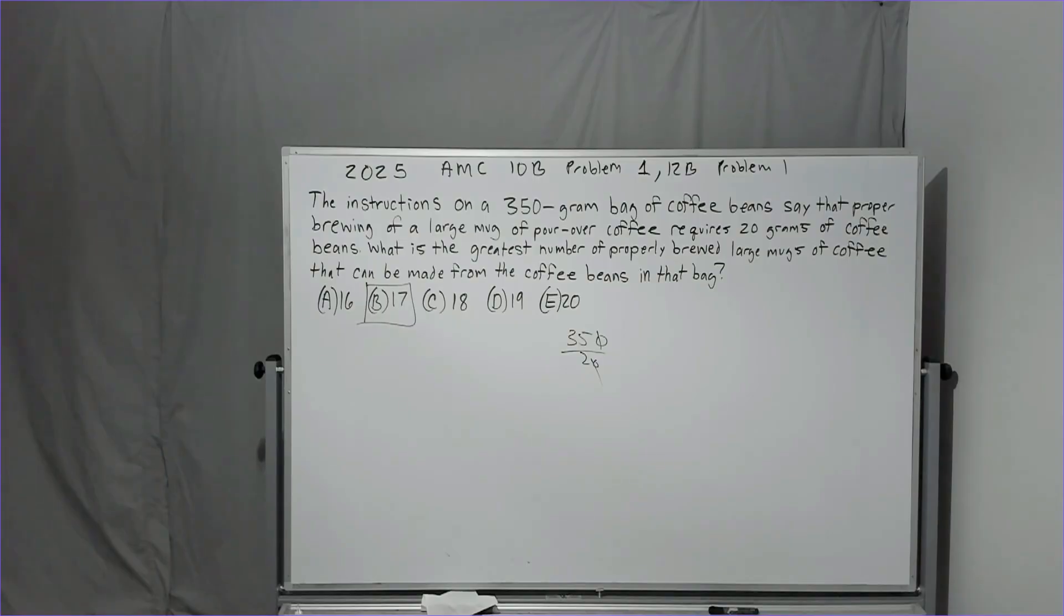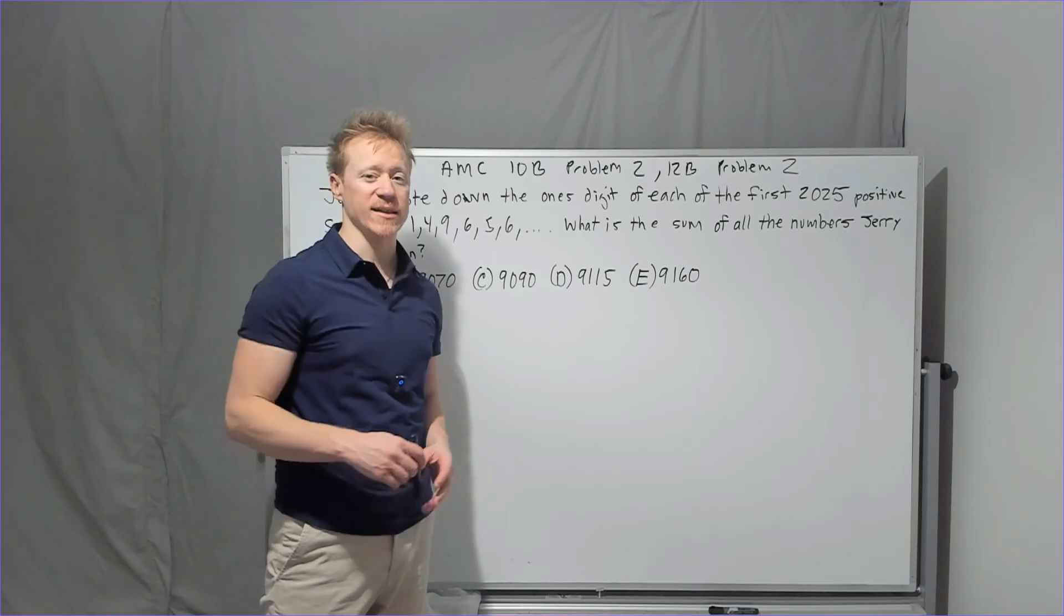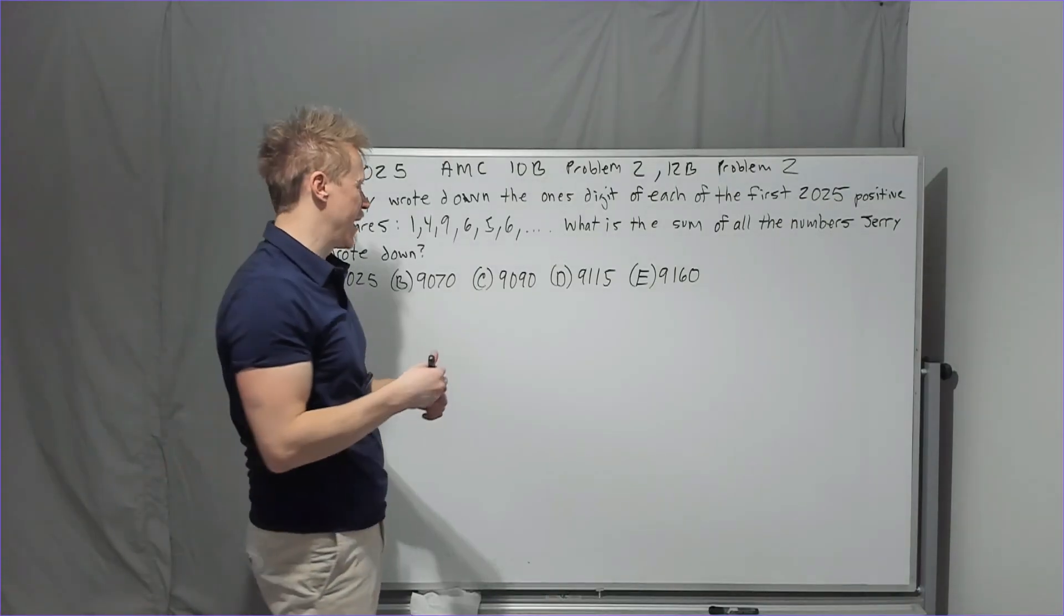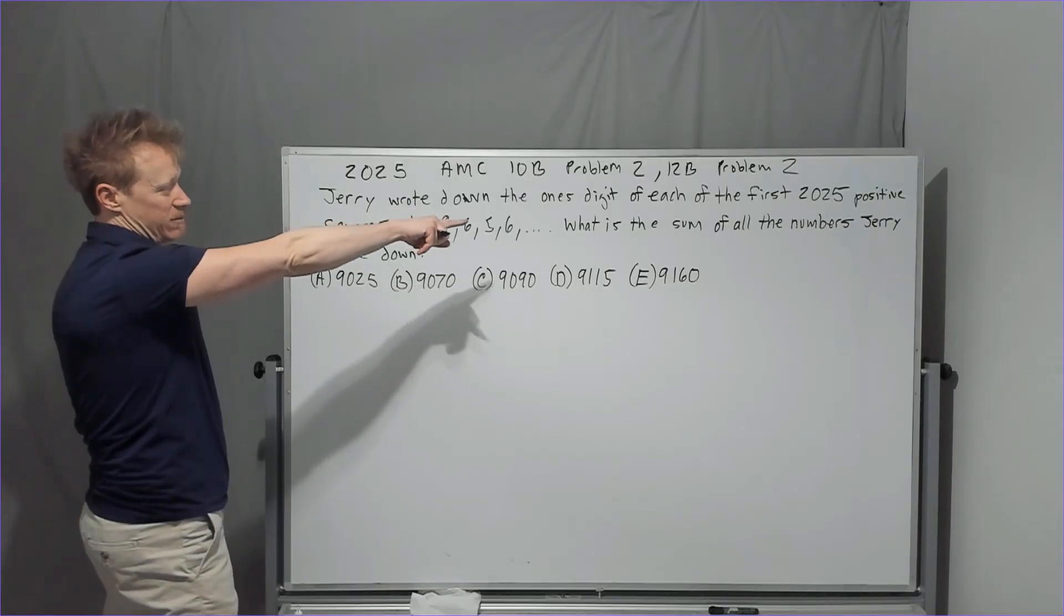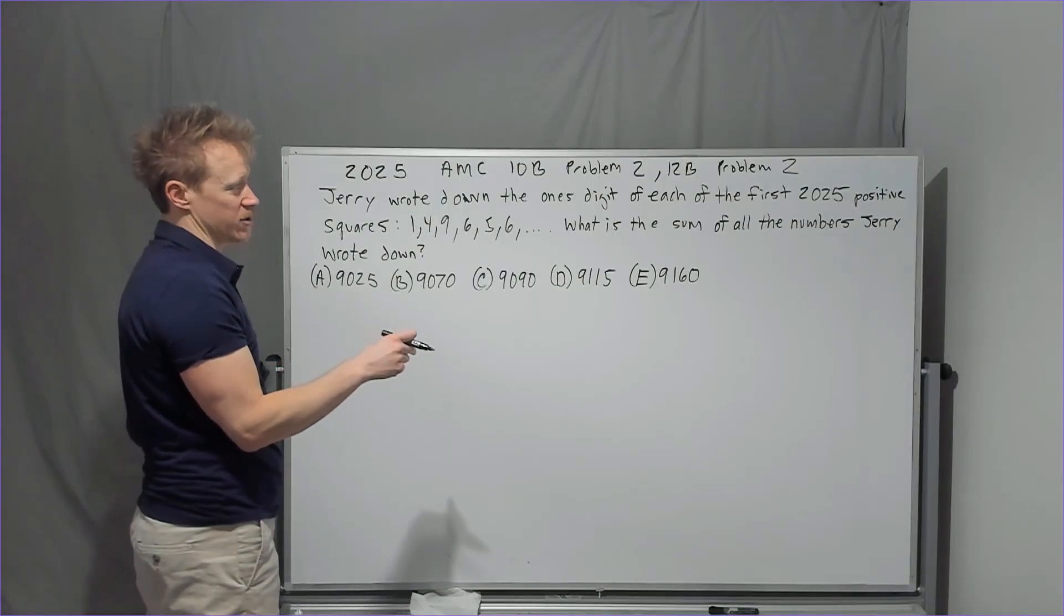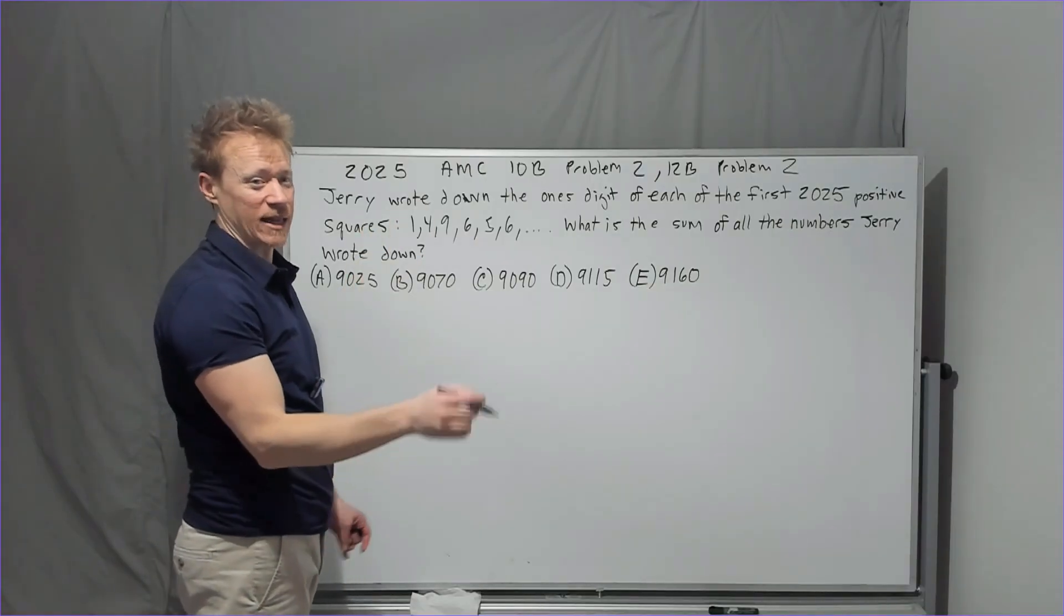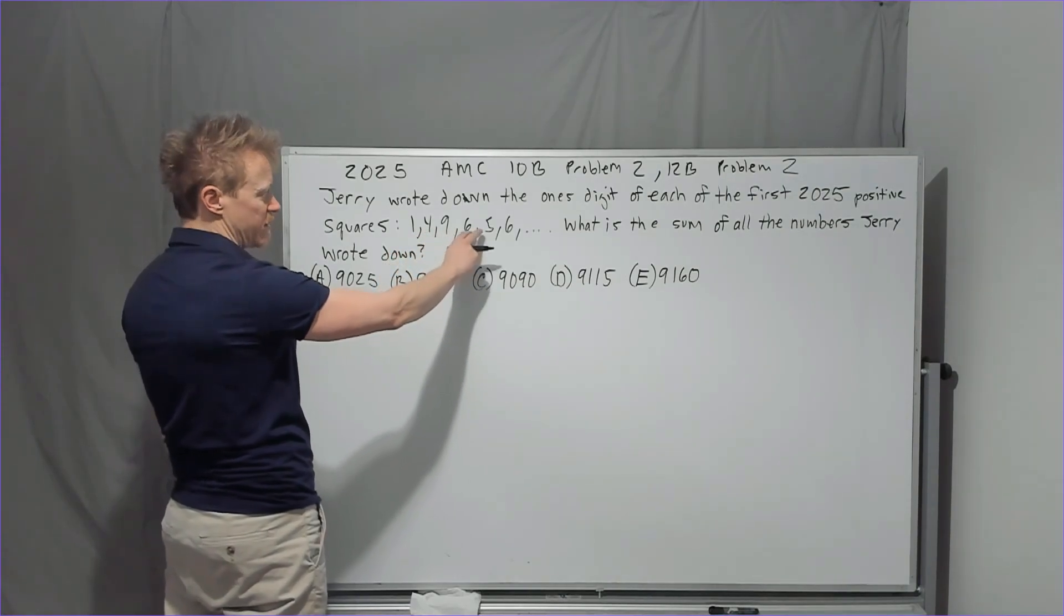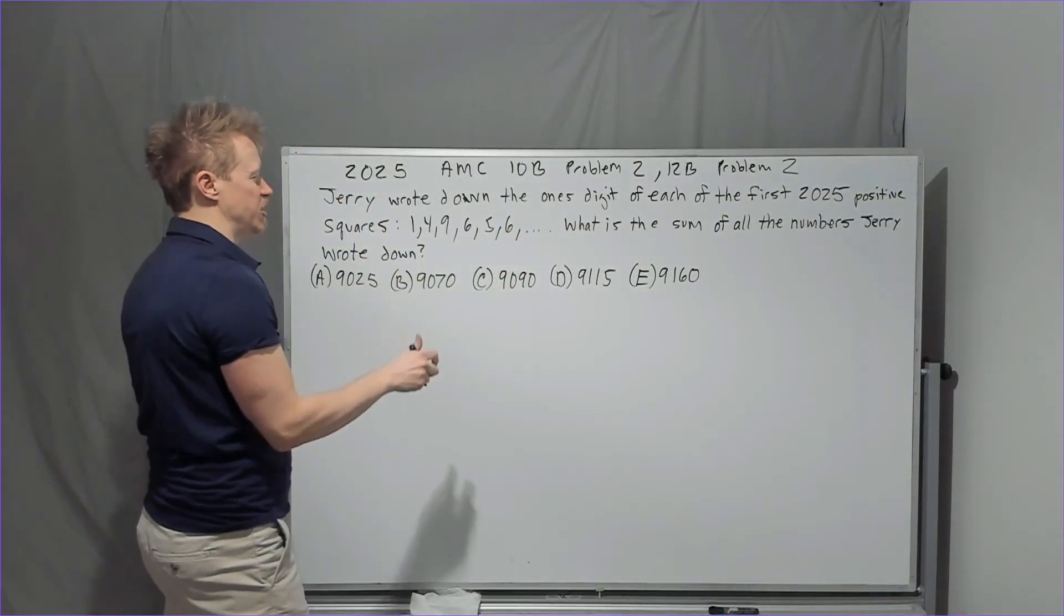Let's get to problem two. My predictions of what I think the cutoffs will be will be in a separate video, but I would say it's probably pretty comparable to the A. 2025 AMC 10B problem two, 12B problem two. Jerry wrote down the ones digit of each of the first 2025 positive squares. So one squared, two squared, three squared, all the way to 2025 squared. You're not stopping at 45 squared. So it's 1, 4, 9, 16 but only the 6, 25 but only the 5, 36 but only the 6. What is the sum of all the numbers Jerry wrote down?